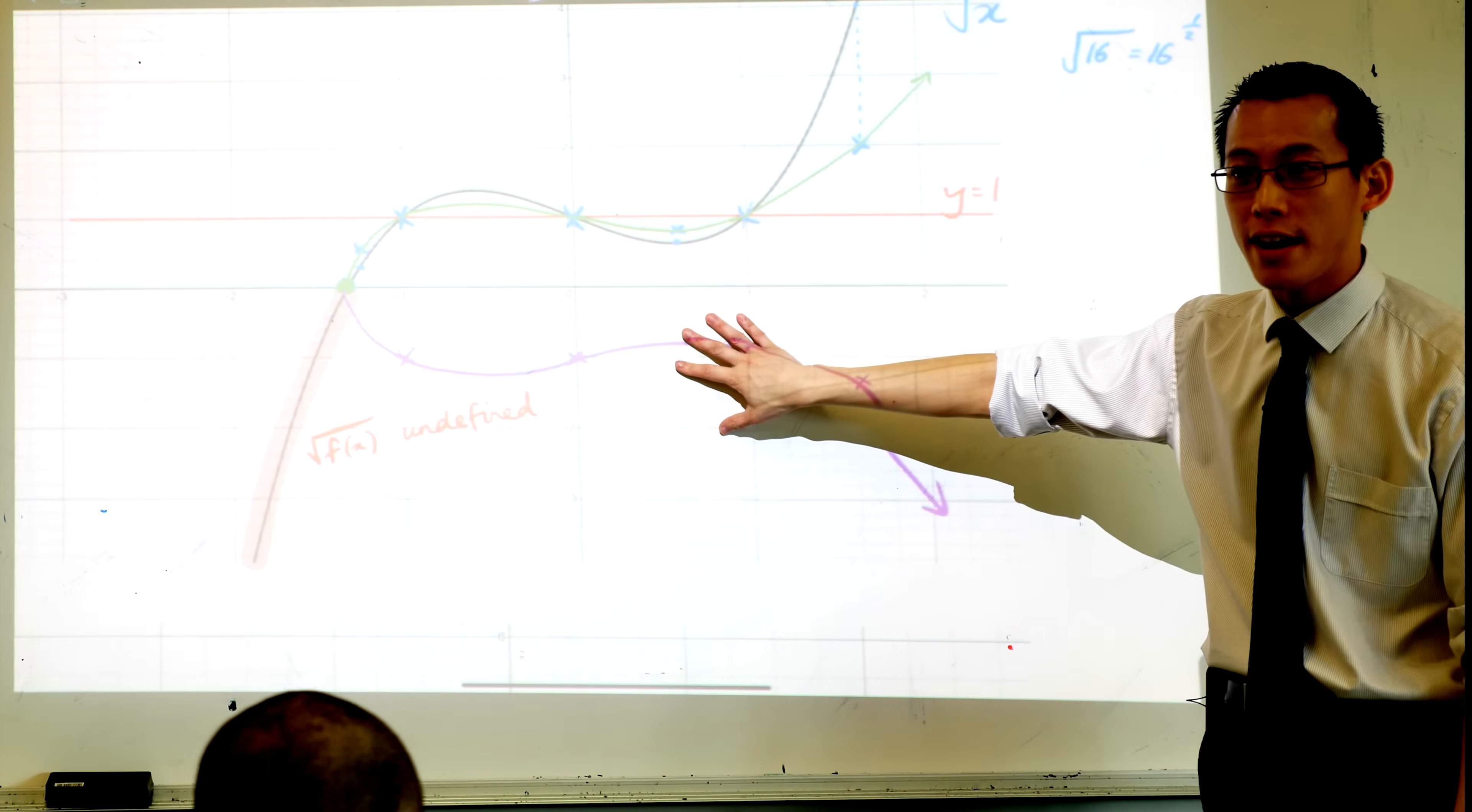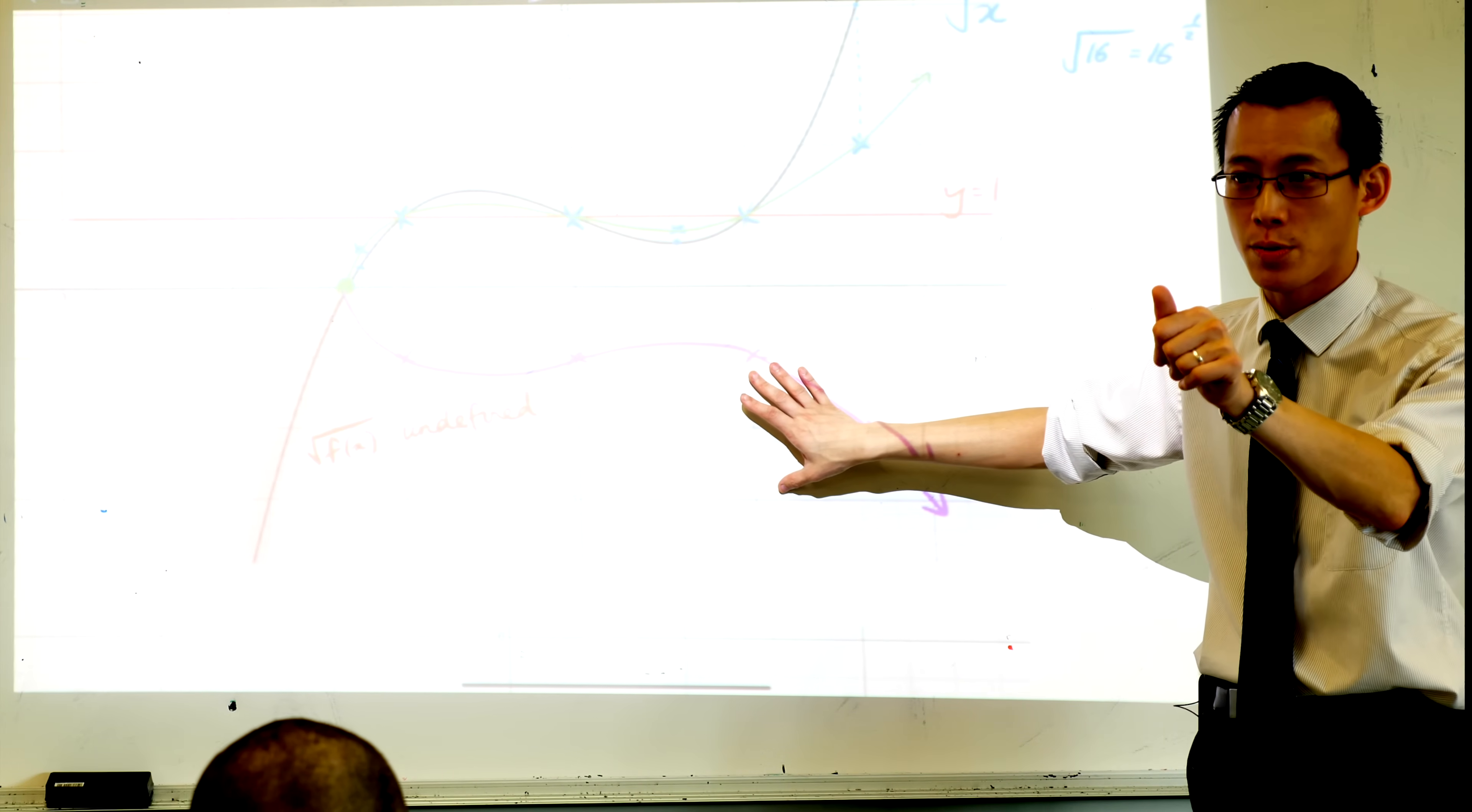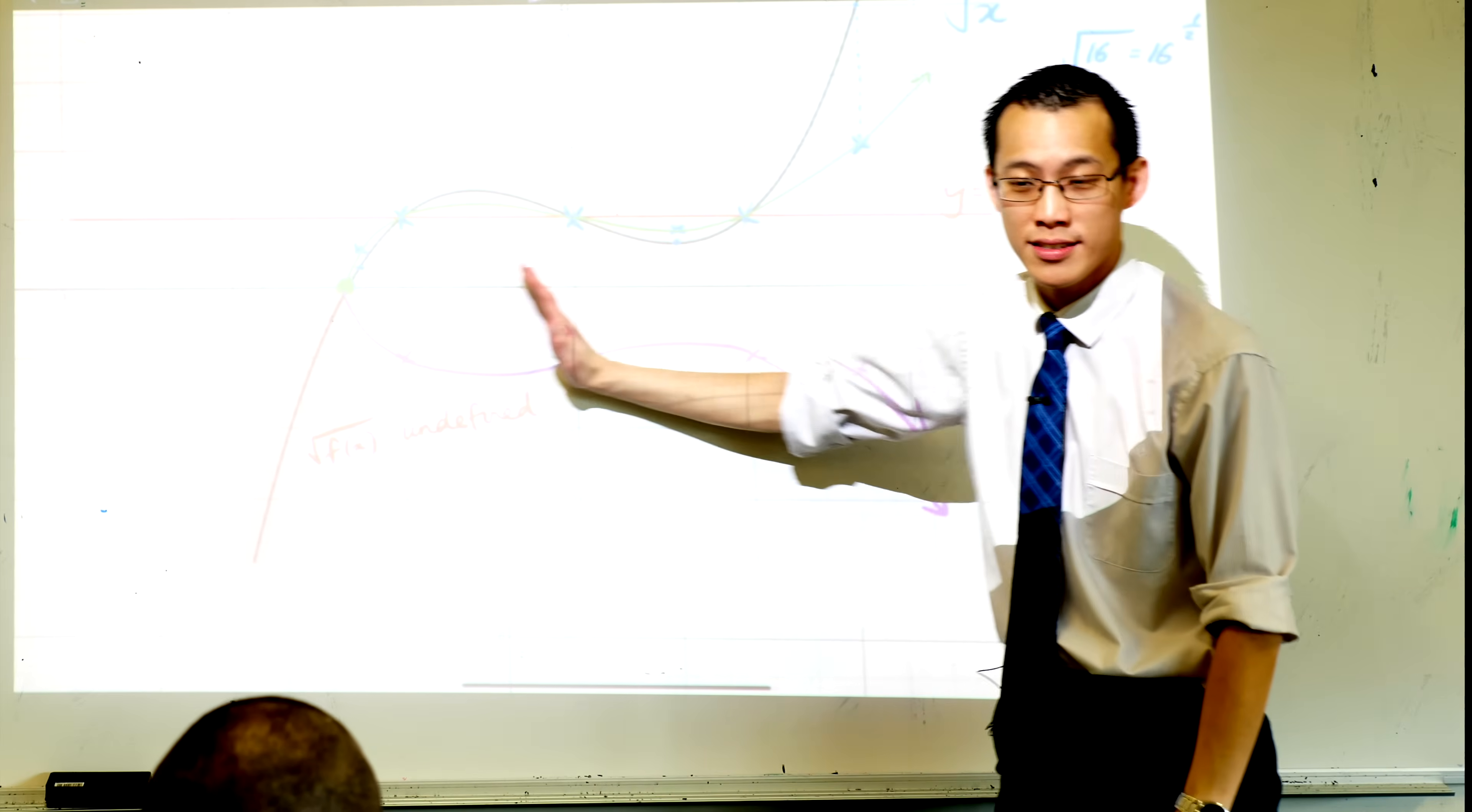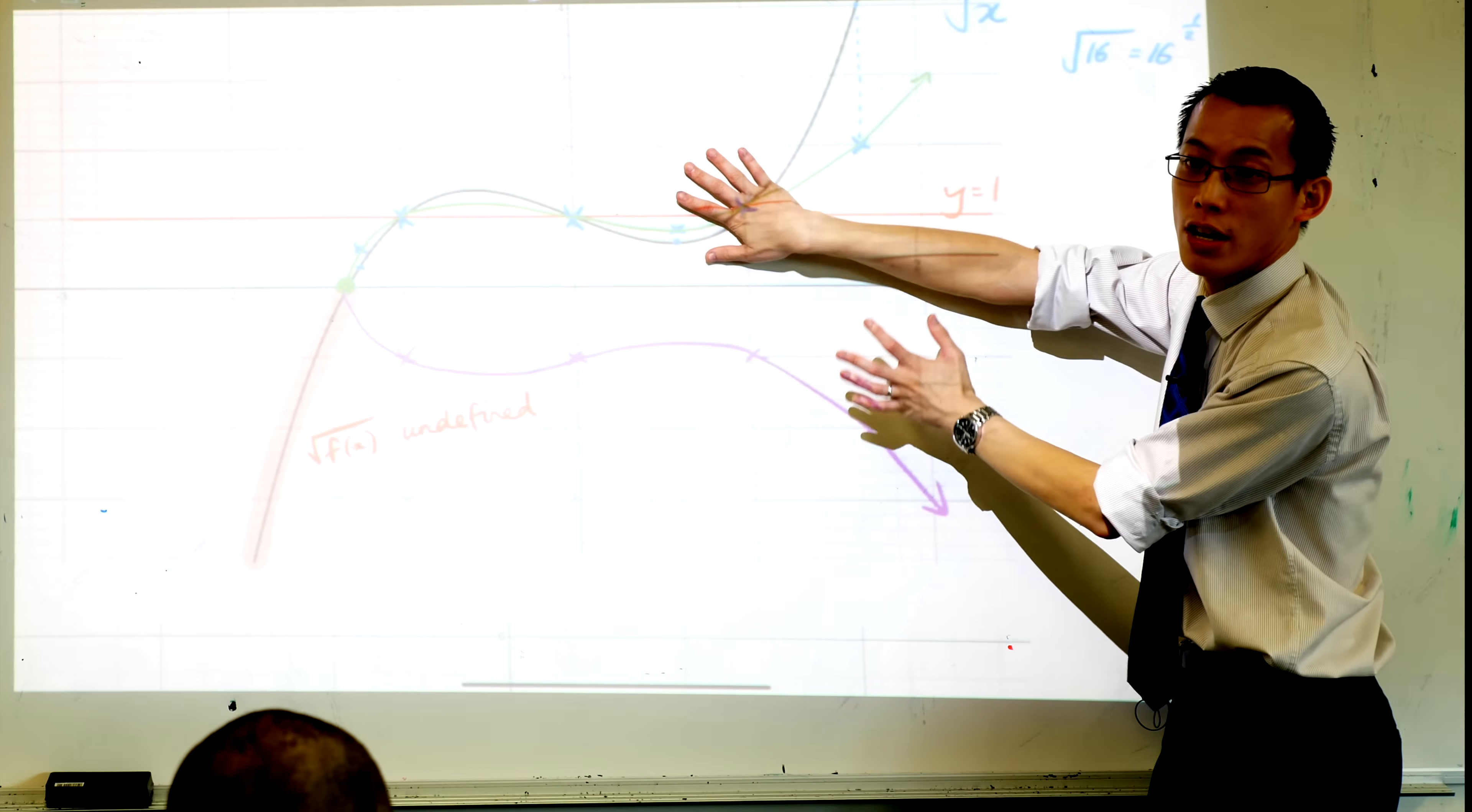Now this guy's weird. Is this a function, this new thing? This is not a function. What do we call it? It starts with an R. It's a relation. Thank you. It fails the vertical line test but just because it fails the vertical line test doesn't mean you can't draw it. It's a really cool thing. The entire thing, green and purple.